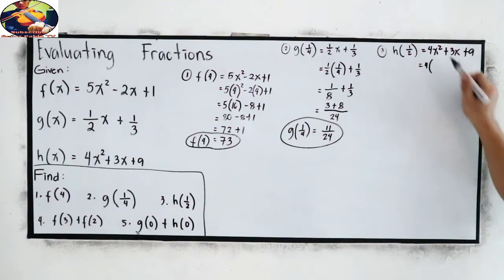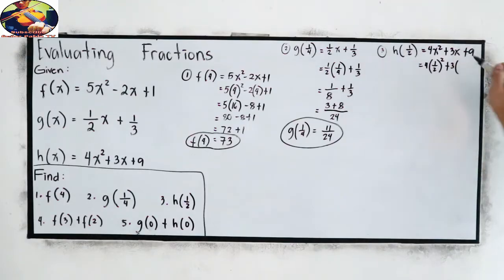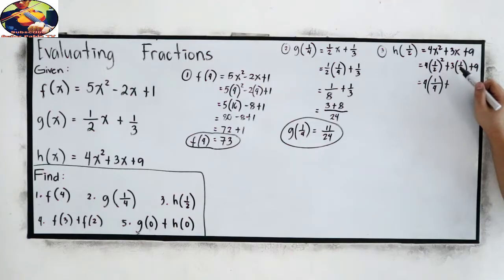So, 4 times x is 1 half. So, 1 half squared plus 3 times x is 1 half plus 9. 4 times 1 squared, that is 1, over 2 squared, which is 4. Plus, our whole number has a denominator of 1. So, 3 times 1, that is 3, over denominator is 1. So, 1 times 2, we have 2, plus 9.